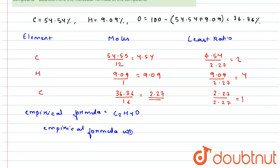12 into 2 plus 1 into 4 plus 16, so this is equal to 44 grams. And vapor density is given as 88 grams.